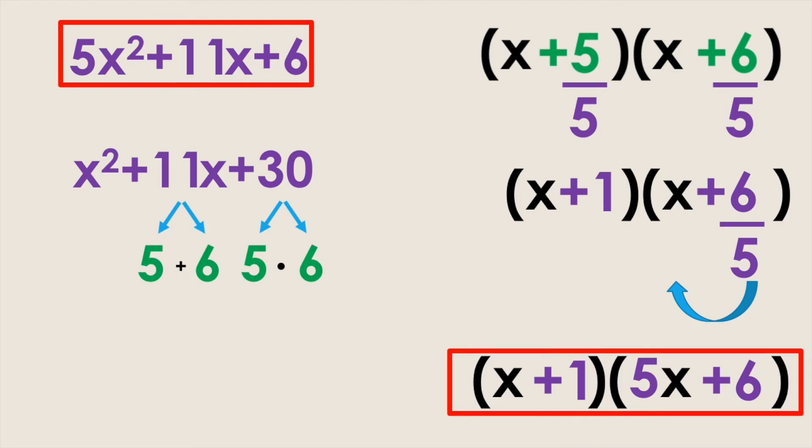So the factored form of 5x squared plus 11x plus 6 is x plus 1 times 5x plus 6 using the slide and divide method.